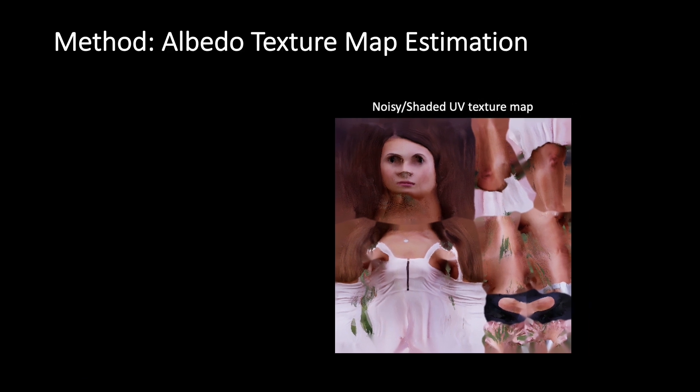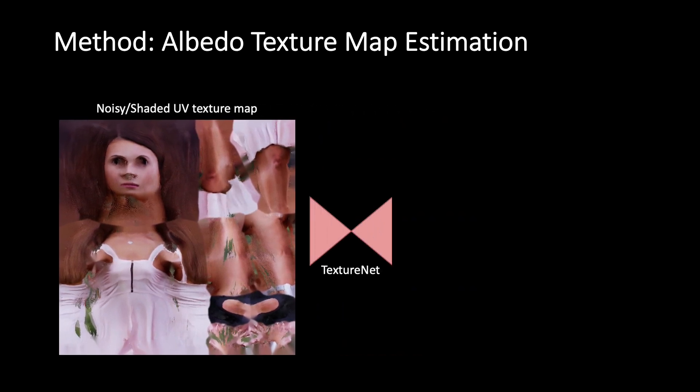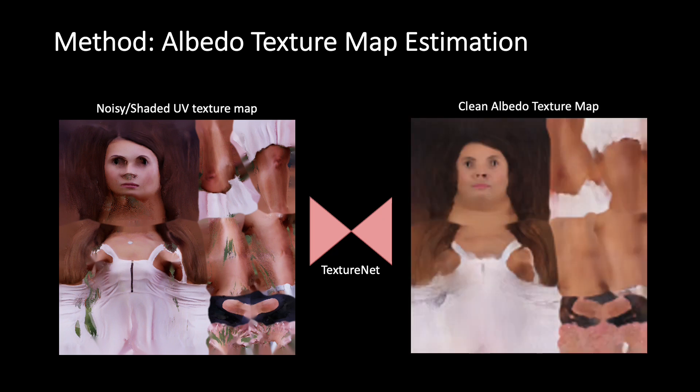To address these problems, we propose TextureNet, which takes a noisy texture map with unknown lighting as input and produces a clean albedo texture map as output.